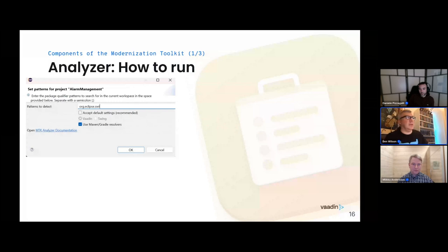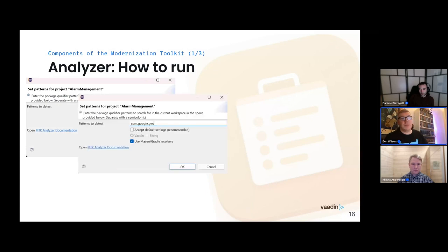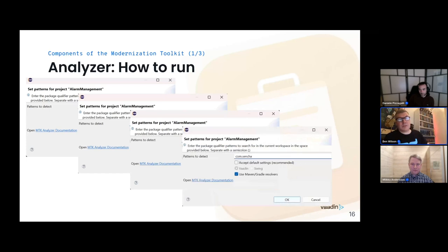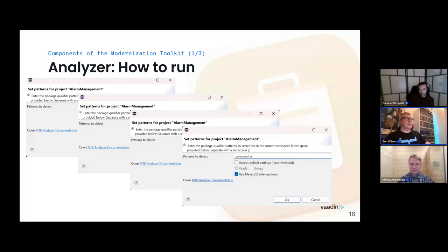These are the default settings, and you can change them or add to the pattern string. You can even use the Analyzer on things that aren't Vaadin or Swing — for example, SWT, GWT (com.google.gwt), JavaFX (javafx), or GXT (com.sensia). All of these can be searched with pattern matching in the Analyzer.